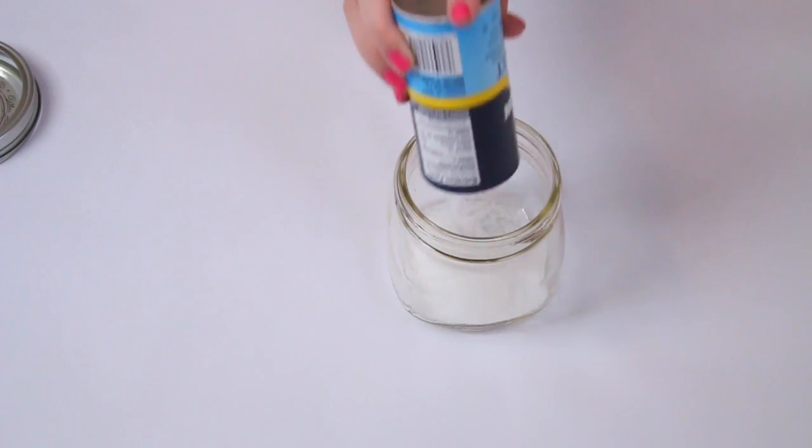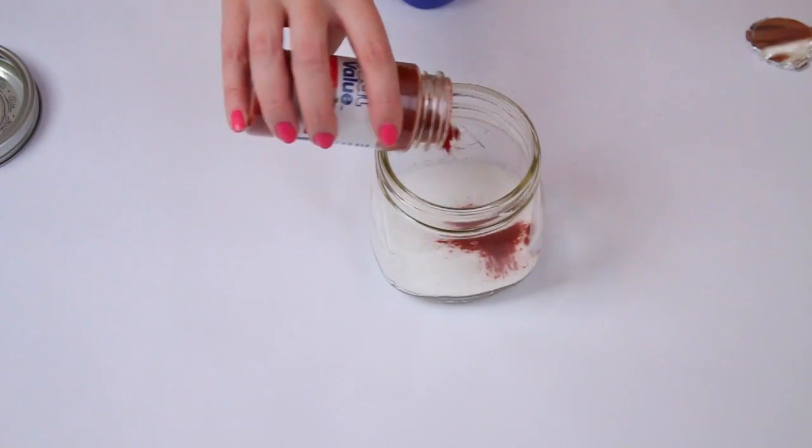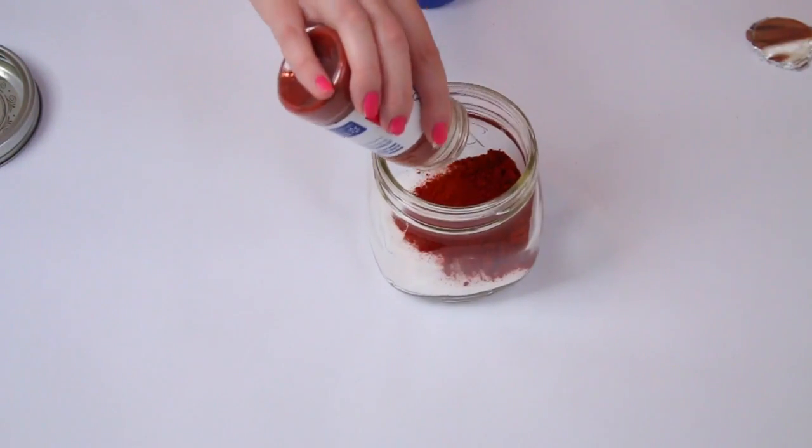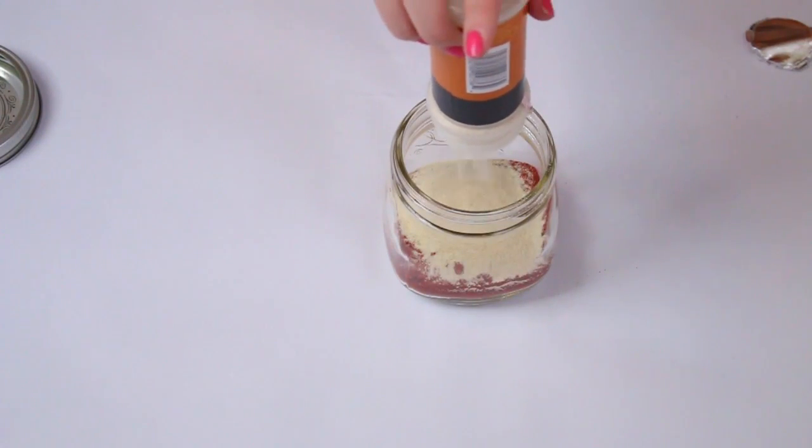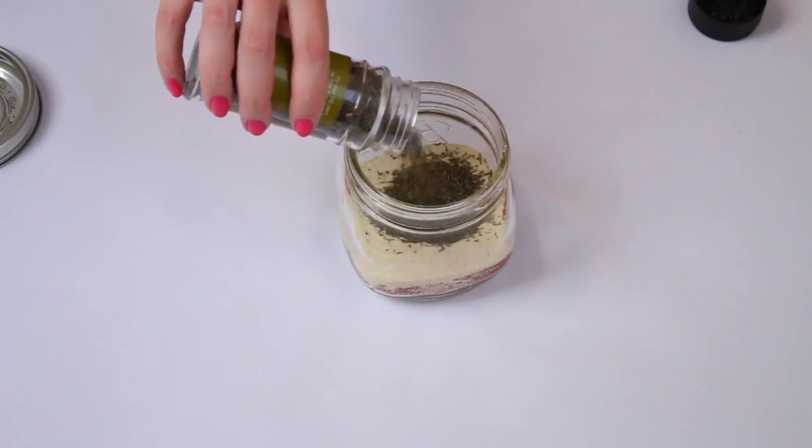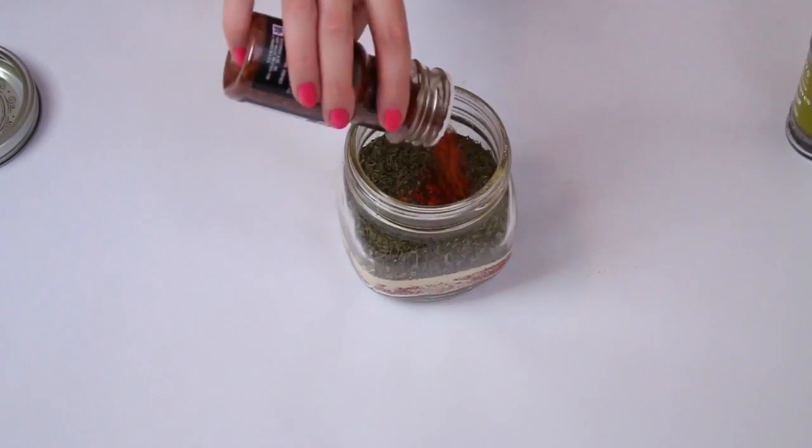So this first one is going to be for beef. There are different ways you could do this, so just feel free to look up what's best online or maybe you know what seasonings your dad already likes to use. I really like to layer these because I think it looks really cool.